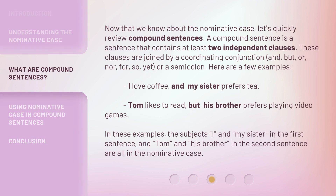Now that we know about the nominative case, let's quickly review compound sentences. A compound sentence is a sentence that contains at least two independent clauses. These clauses are joined by a coordinating conjunction — and, but, or, nor, for, so, yet — or a semicolon.